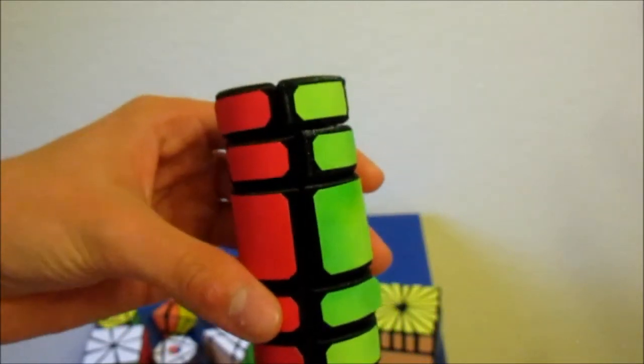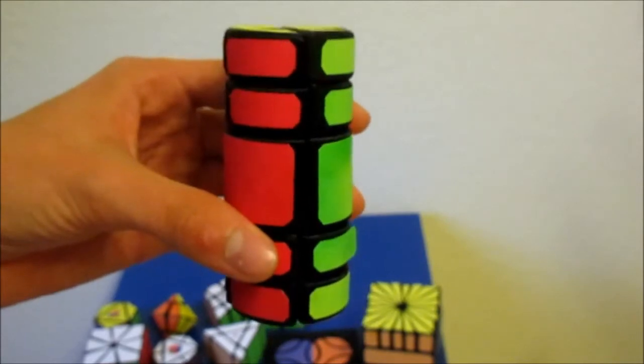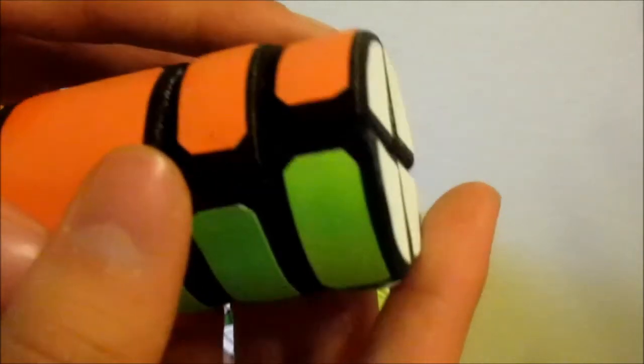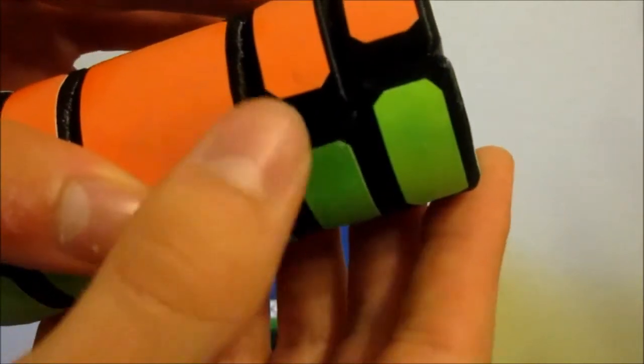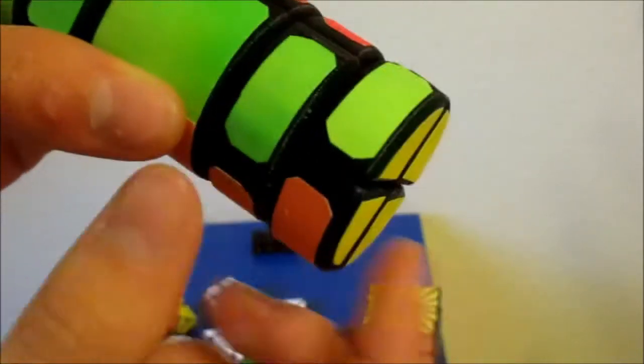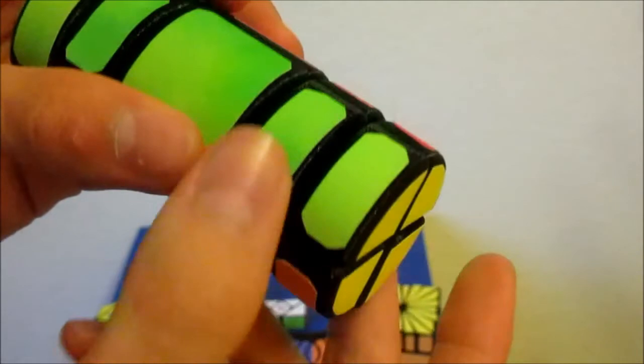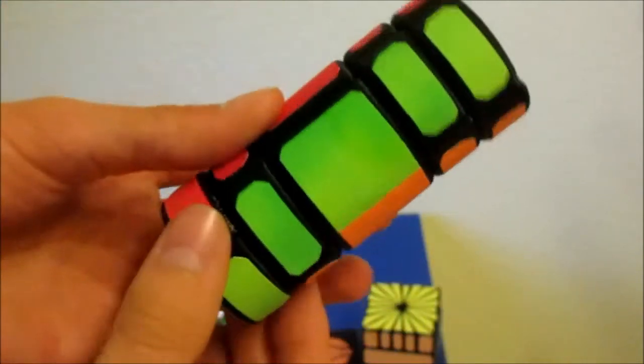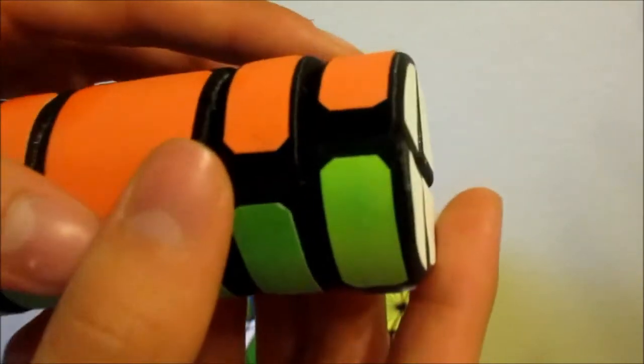One thing that I regretted on this puzzle is the stickering. I was so happy about the black plastic that I just put the stickers on right after the print. Due to the rough surface and cylindrical shape of the puzzle, the stickers tend to fall off or warp at the end.